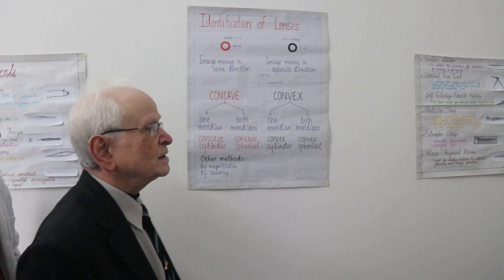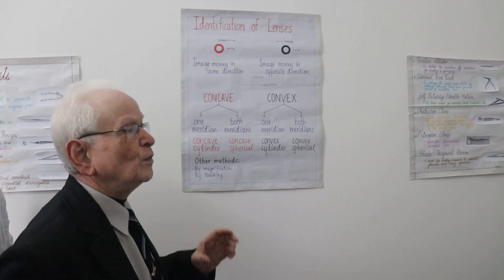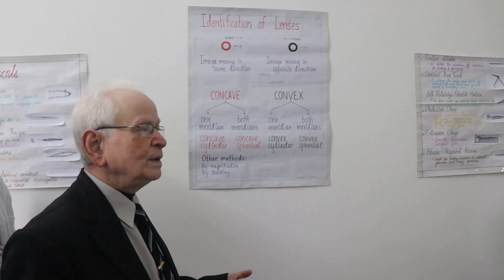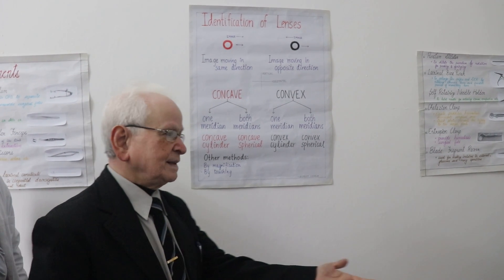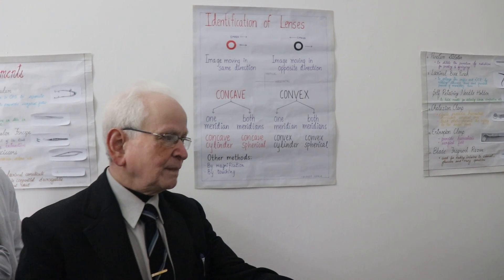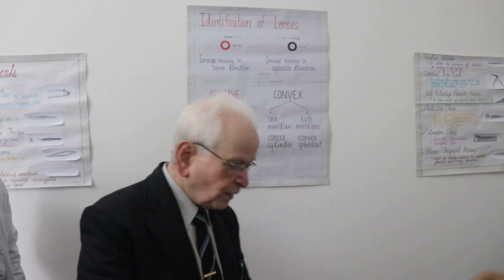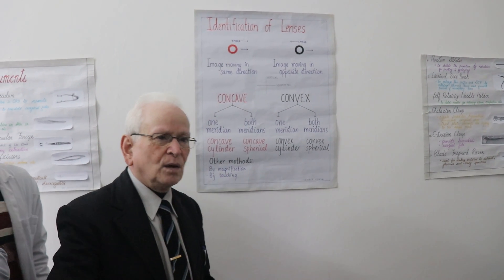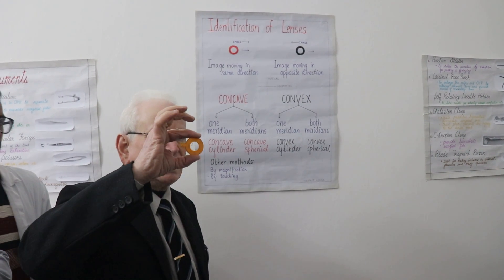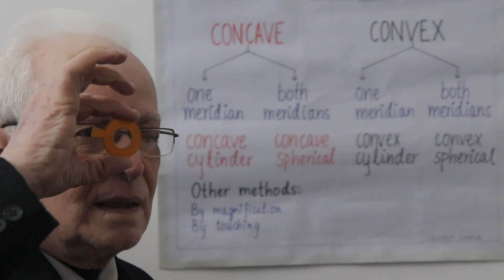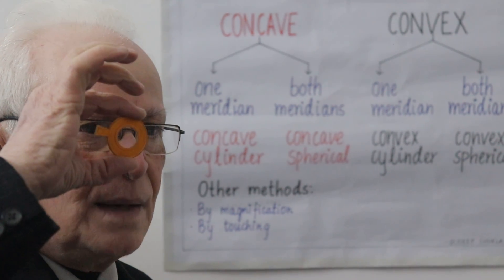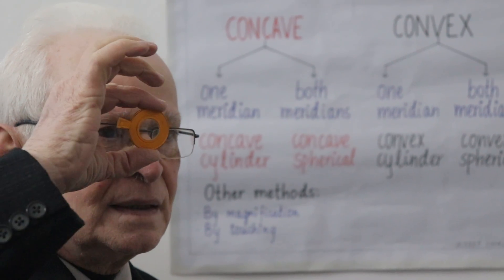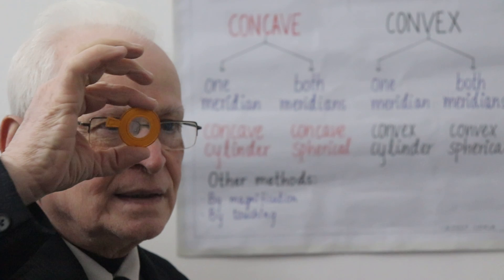There is a test known as the movement test. I will explain the procedure. Take the lens, hold the lens in front of your eyes, and move it vertically and move it horizontally.